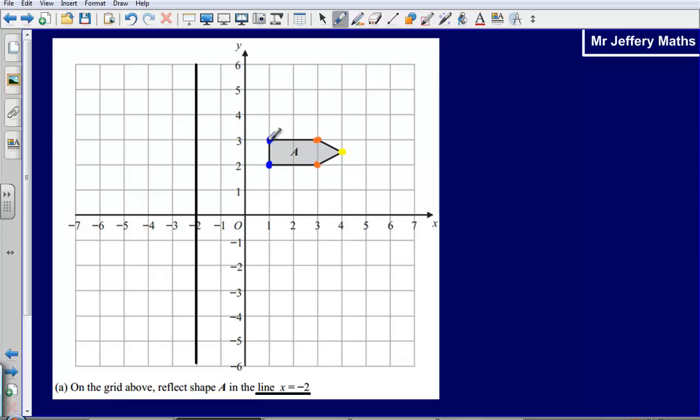So this one here, we need to count to the mirror line which is here. That is going to be one, two, three. So then count three on the other side, one, two, three. That is going to give me that point there. Now this one here, we can see that this one is just one below it. So that is going to give me that point there.